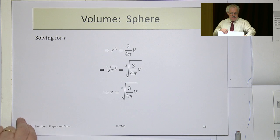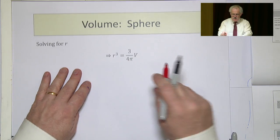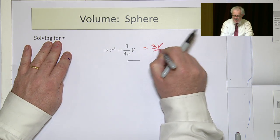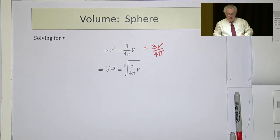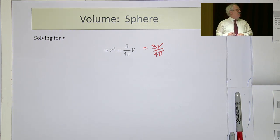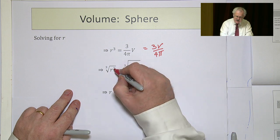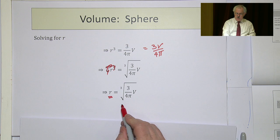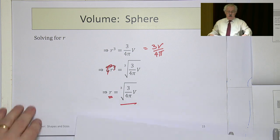We now have r³ = 3V/(4π). To get from r³ to r, we take the cube root — that's the one thing that will eliminate the cube. So r = ∛(3V/(4π)). That's our formula for the radius of a sphere in terms of its volume.